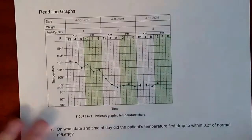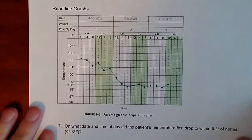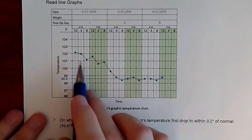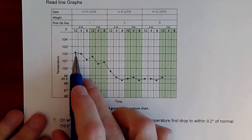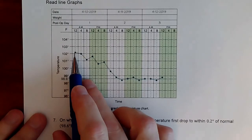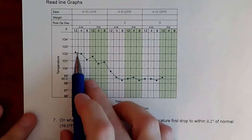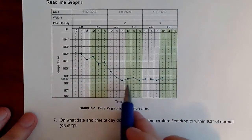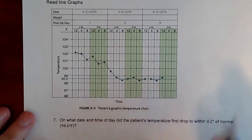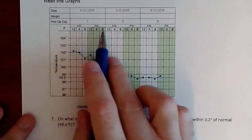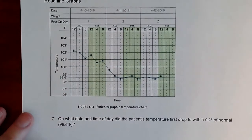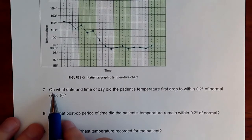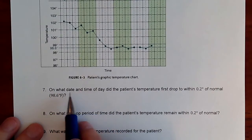The last couple of questions use a line chart — a patient's temperature chart. The patient came in with a little over 102 degrees temperature. They were at a hospital getting meds, and their temperature is overall decreasing toward a normal range. We have time increments showing when temperature was taken so we can see how they're doing.